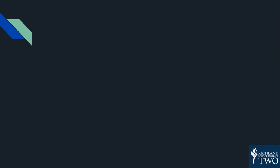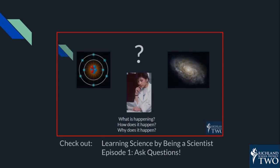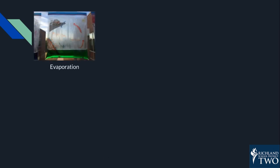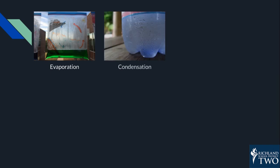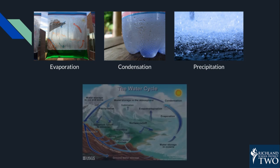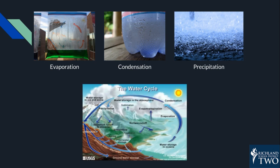Do you remember what we said about science starting with a question? When scientists have enough evidence to answer the question, one way they will communicate what they found out about their investigation is by developing a model that shows what happened. If you do an investigation into how evaporation, condensation, and precipitation are related, you would organize what you learned about them in a diagram that shows how they are all connected.